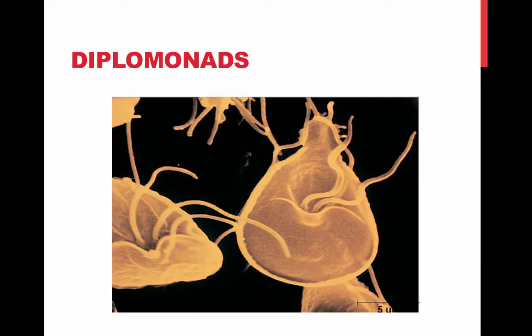Diplomonads have modified mitochondria called mitosomes. They derive energy anaerobically, for example by glycolysis. They have two equal-sized nuclei and multiple flagella. One of the famous parasites in this group causes giardia, which is an intestinal infection that is very common in the United States and can be caught by swimming in lakes and rivers.